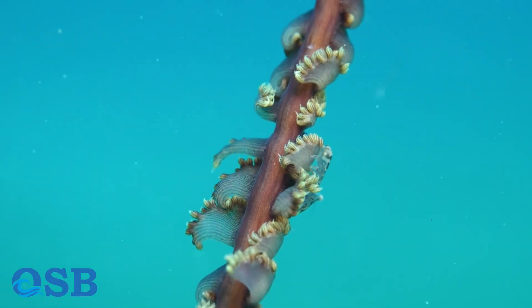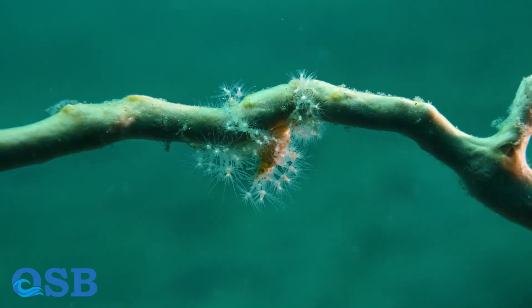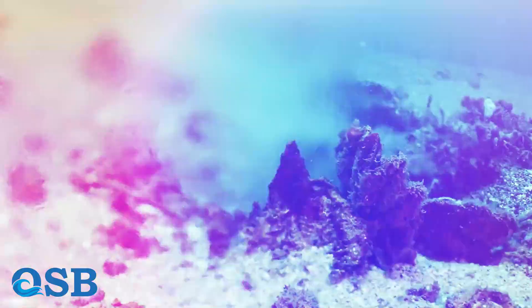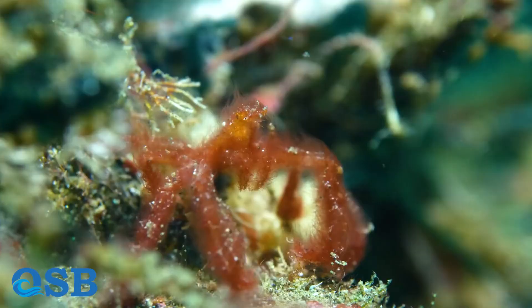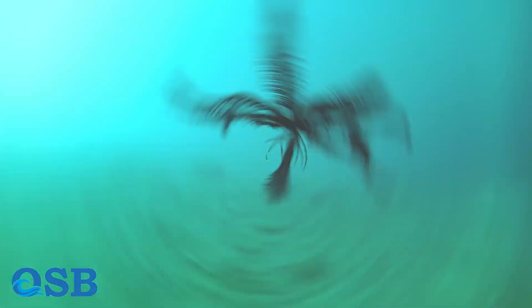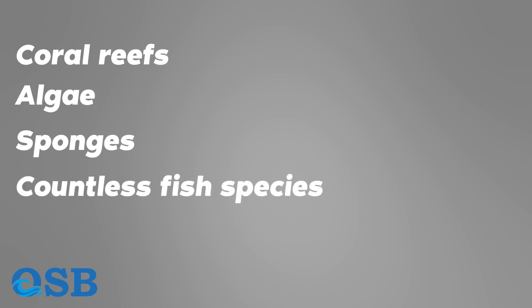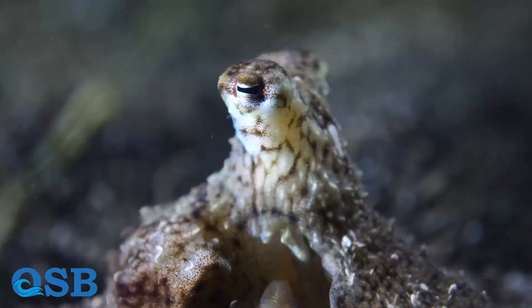The springs of the ocean harbor incredible biodiversity, supporting a wide range of marine life. These underwater oases become thriving ecosystems, offering sanctuary and nourishment to numerous species. Coral reefs, algae, sponges, and countless fish species call these springs their home. It's truly a spectacle of nature's abundance.